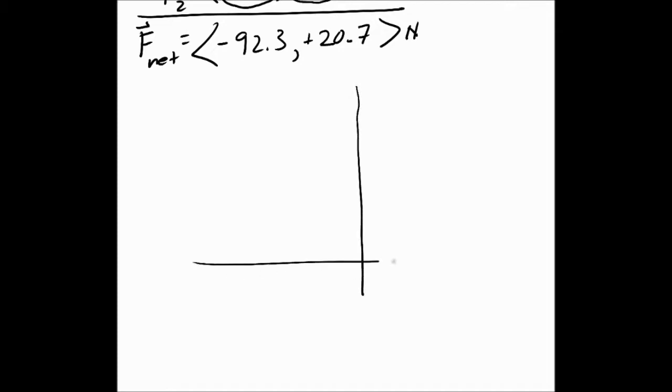Anytime we do a conversion, we draw a coordinate scheme. We put the vector on the coordinate scheme. So this vector, we know its components first. So here's the x component, which is 92.3. And the y component, which is 20.7. And then we can draw the hypotenuse, which is the full vector, full f net.